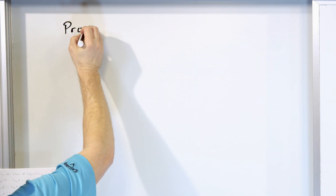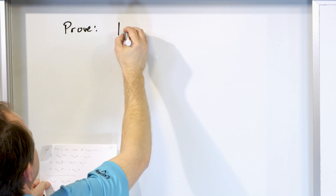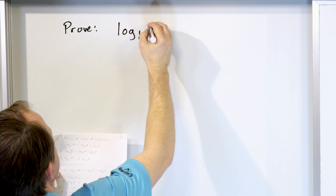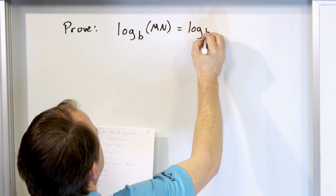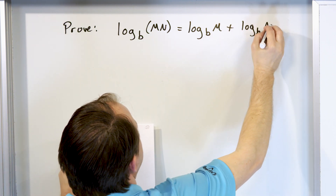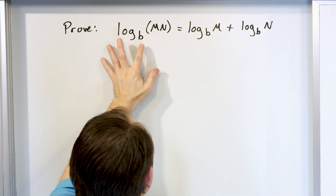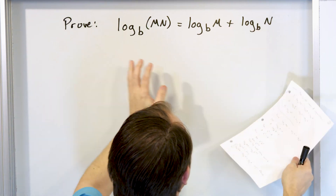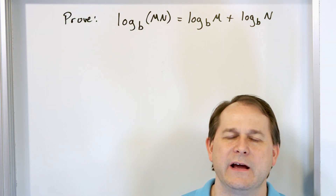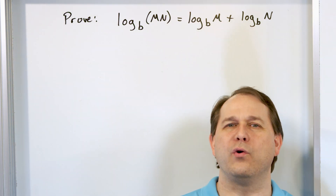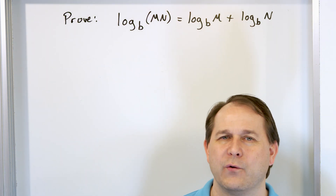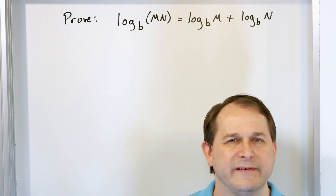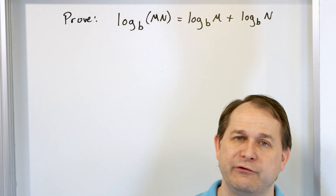So we're going to prove three laws of logarithms. The first one is the product rule: the logarithm base b of the product m times n equals log base b of m plus log base b of n. When you have two things multiplied inside a logarithm, it becomes the addition of two logarithms — multiplication transforms into addition, which is very useful for simplifying advanced math.